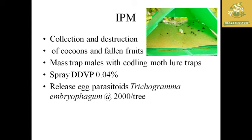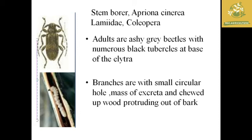The next pest is stem borer, where the scientific name is Apriona cinerea, belonging to the family Cerambycidae and order Coleoptera. The adult is an ashy-gray beetle with numerous black tubercles at the base of the elytra. They bore into the stem of the plant, and small circular holes can be seen in the branches. The holes are covered with masses of excreta chewed by these stem borers, making them easy to identify.